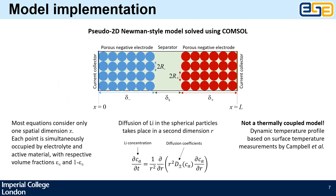To briefly talk about the model: it's going to be a pseudo-2D Newman model. How Newman models work is that each point on the x-axis is simultaneously occupied by a fraction of electrolyte and solid electrode particle — this is called porous electrode theory — where most of the equations occur along that x-axis. One is different: the diffusion of lithium in these spherical particles. The model is not thermally coupled; instead we're going to use a dynamic temperature profile based on the surface temperature measurements taken by Campbell et al's experiments, and the model is going to be solved using COMSOL.